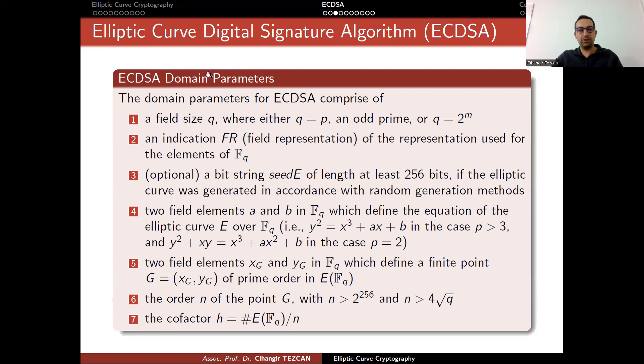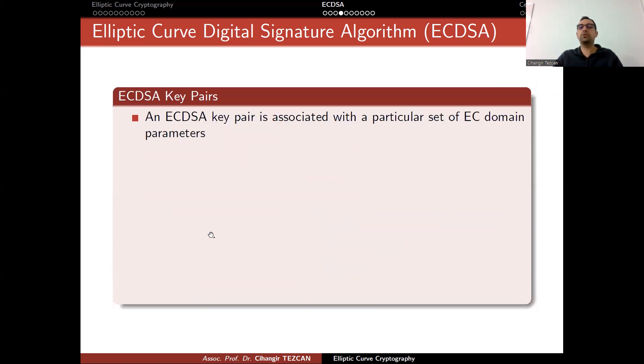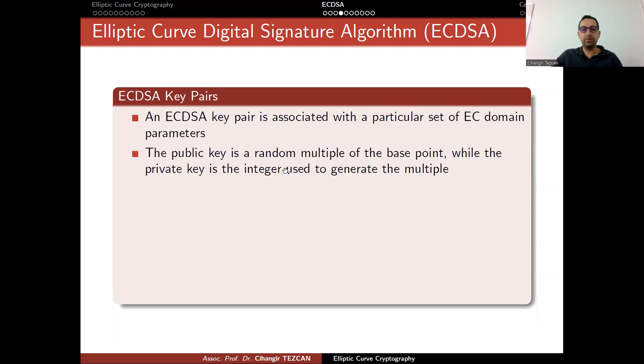An ECDSA key pair is associated with a particular set of EC domain parameters, which we explained in the previous slide. The public key is a random multiple of the base point, while the private key is the integer used to generate the multiples. In other words, you choose a random number, and you add the base point to itself that many times and obtain your public key.